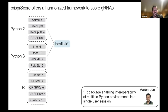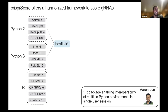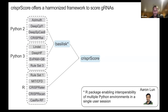The nice thing about being in the same office as Aaron is that Aaron was developing Basilisk, which is an R package that allows users to use different Python environments in the same R session — including Python 2 and Python 3 simultaneously. It's built on top of reticulate but allows different Python environments. Built on that, we created CRISPRscore, which is basically a way to get all those scores from those Python environments. At the end of the day, we get a nice table of all the summarized scores that the user can consume.